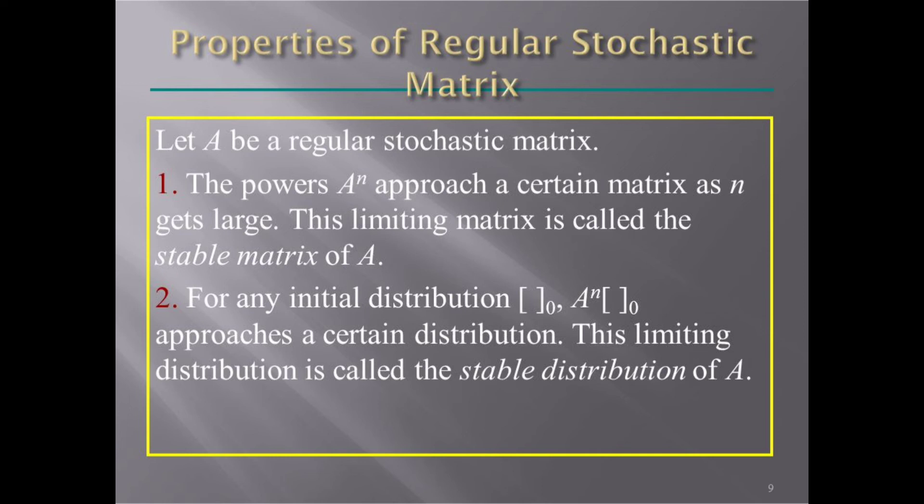A raised to n times the distribution approaches a certain distribution. This limiting distribution is called the stable distribution of A.